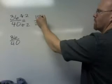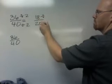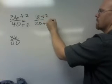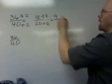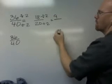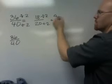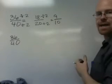In this case we'll reduce it by 2. 18 divided by 2 is 9, and 20 divided by 2 is 10. So now our new fraction is 9 tenths.